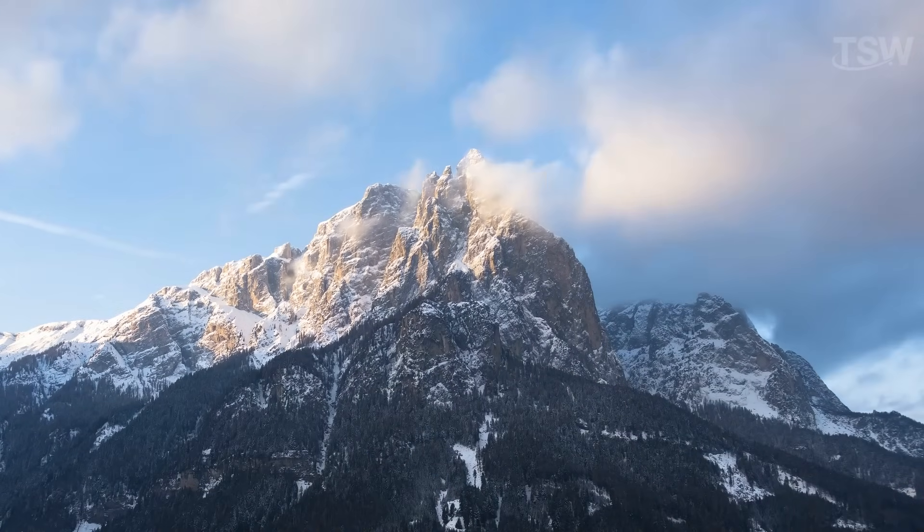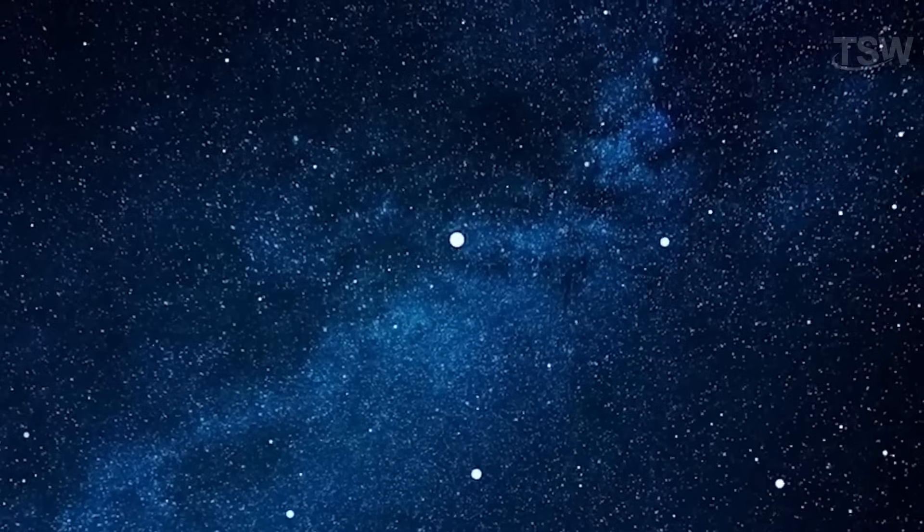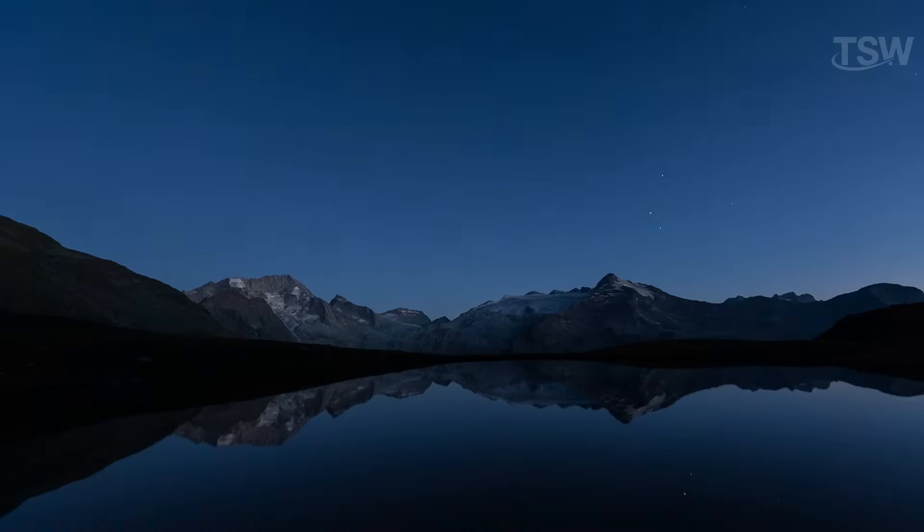During the day, the sky on Earth is bright because the sun lights up the side of the planet we're on. At night, as the Earth rotates, we're turned away from the sun, and everything goes dark. While this explanation makes sense at first, it's only part of the story.